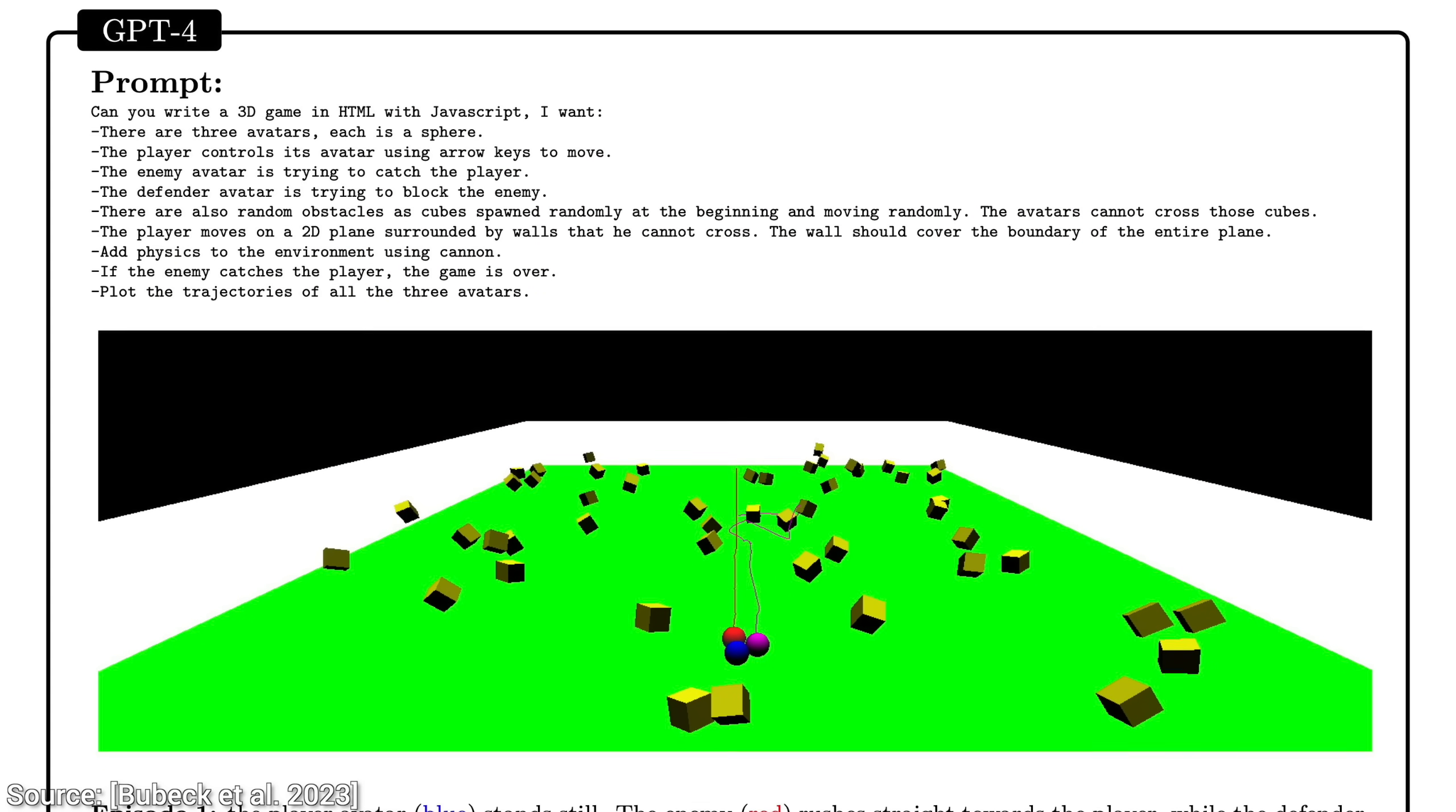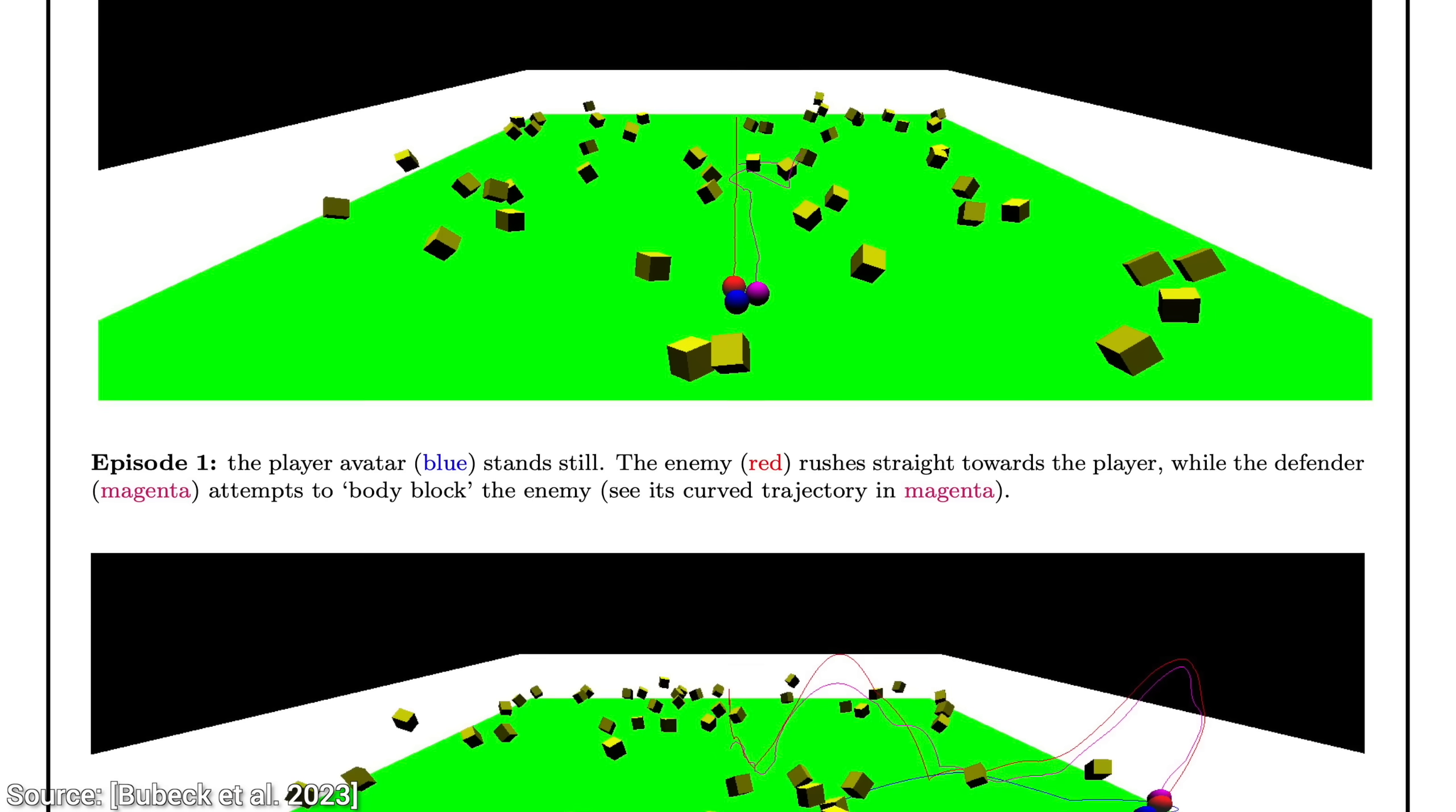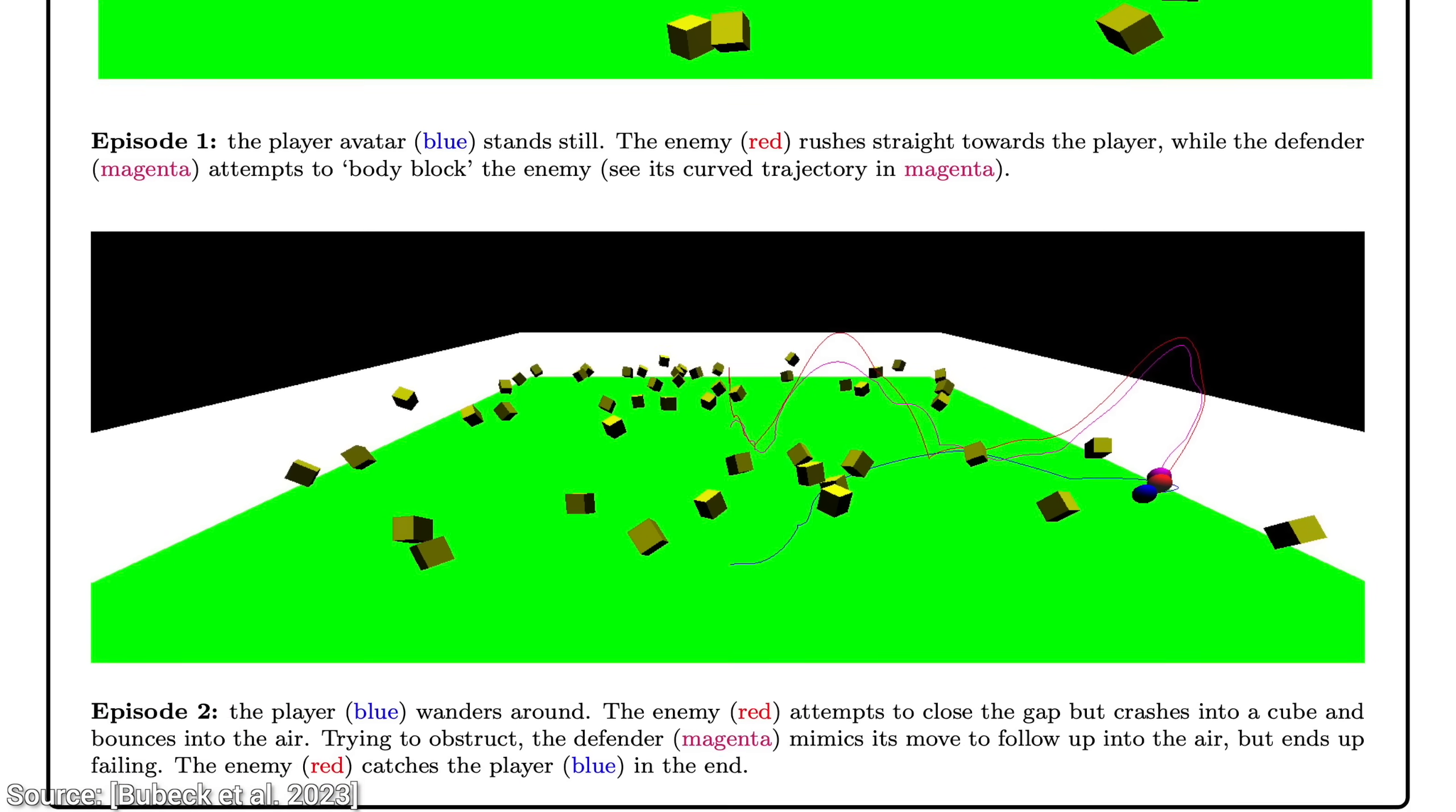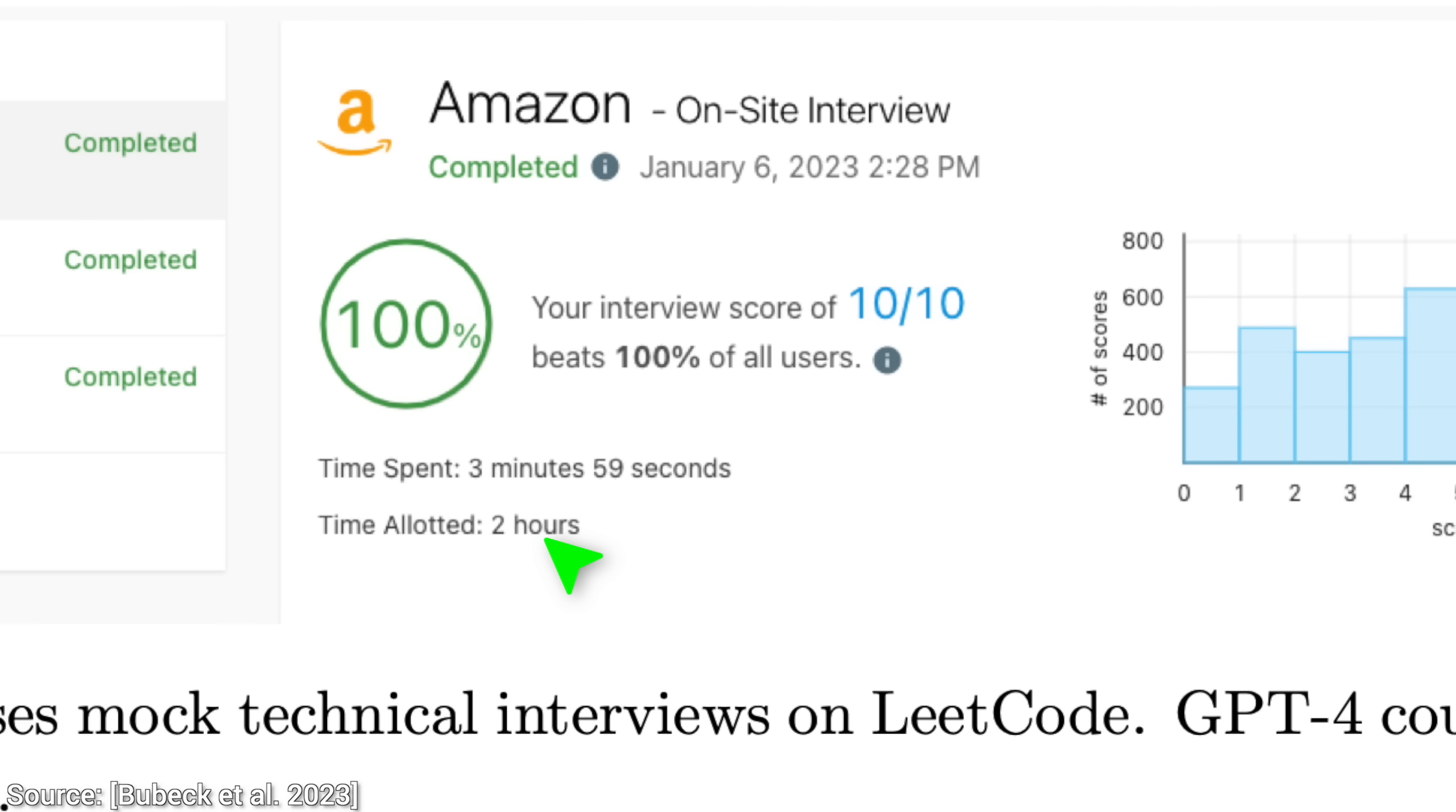And there is so much more to talk about, I don't even know where to start. When asked, it can create a simple video game in HTML and JavaScript, even with rudimentary physics. Its coding skills are so sharp, it would likely be hired as a real software engineer. And that is perhaps an understatement. I love this part. Time allotted, two hours. Time spent one second shy of four minutes. Not hours, minutes. Holy mother of papers! It crushed the interview faster than any human would.